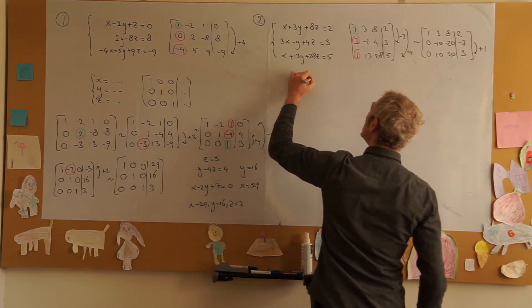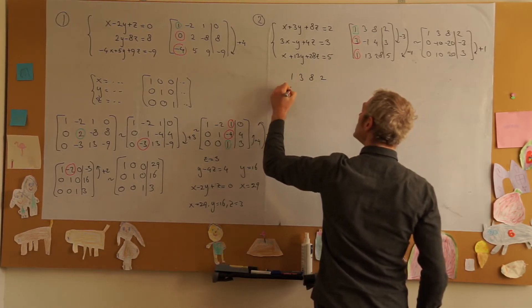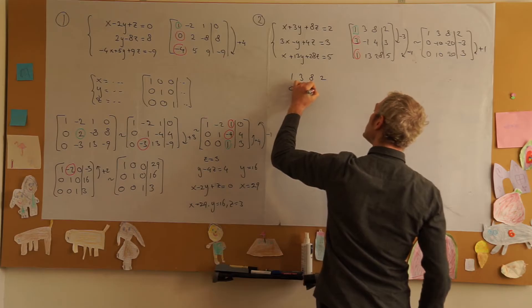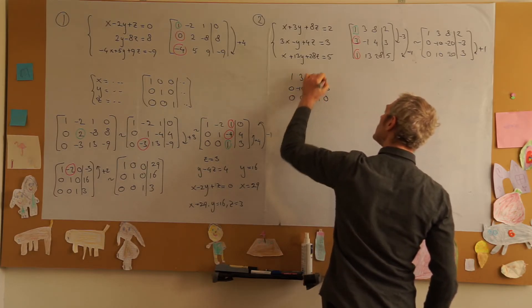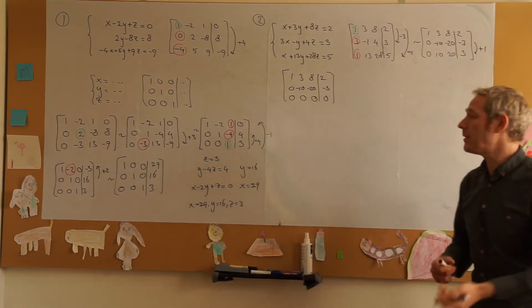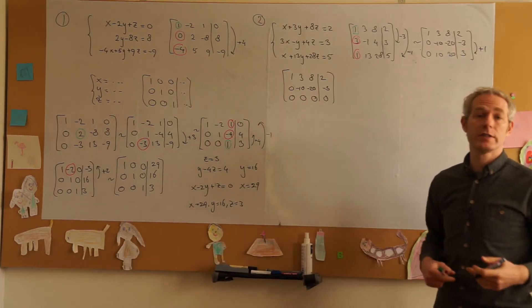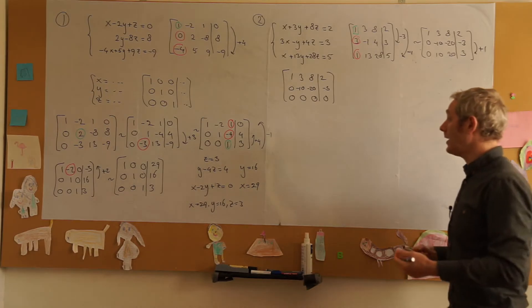1, 3, 8, 2; 0, -10, -20, -3 and 0, 0, 0, 0. Which means we have infinitely many solutions. If we only have one row of 0 the solution set will be a line.